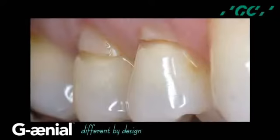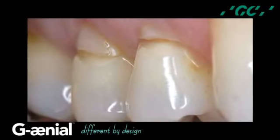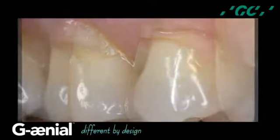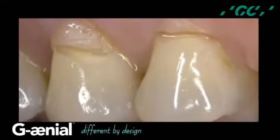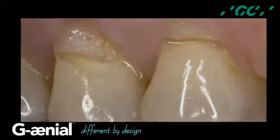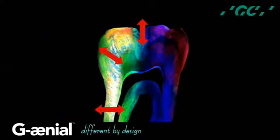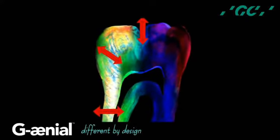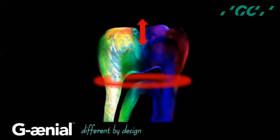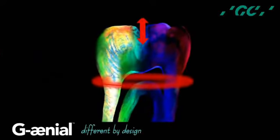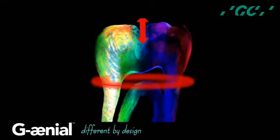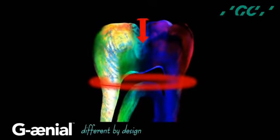Preoperative view of defective composite restorations on the maxillary right premolars. In the restored tooth, for cervical restorations, lateral flexure resulting from eccentric forces produces tensile stresses at the marginal interface of the restoration, whereas heavy centric forces generate compressive stresses along the marginal interface of the cervical restoration.